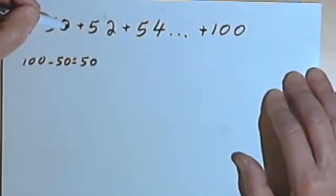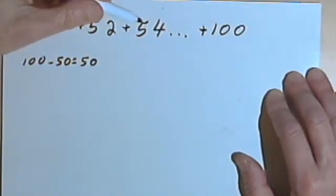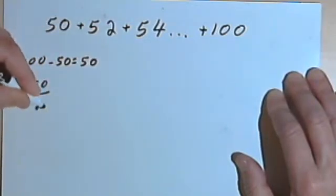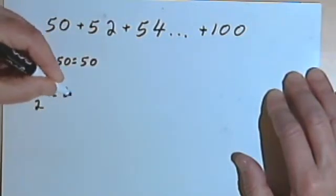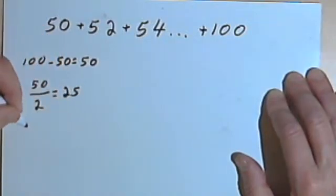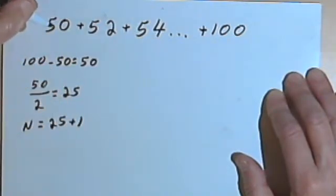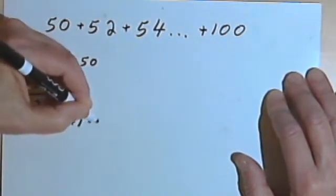And then since I'm counting by 2s, my common difference is 2, I want to take that 50 and divide by 2. That'll give me 25. And then to find n, I'm going to add that 25 plus 1 for the first term, and n is going to be 26.